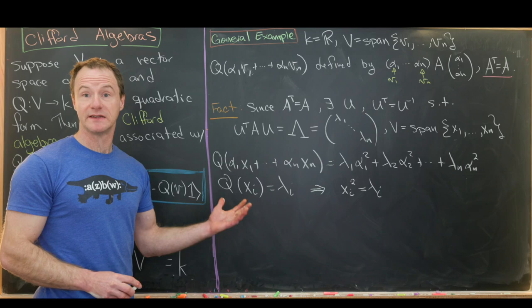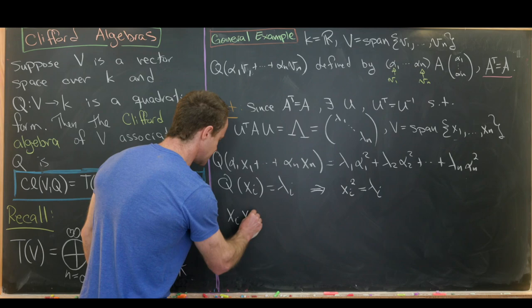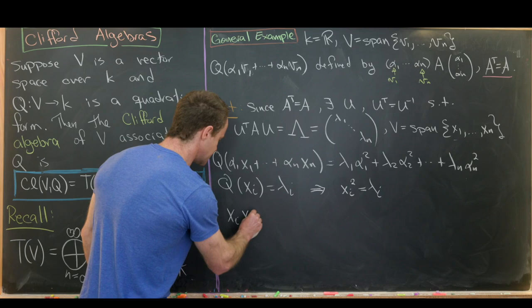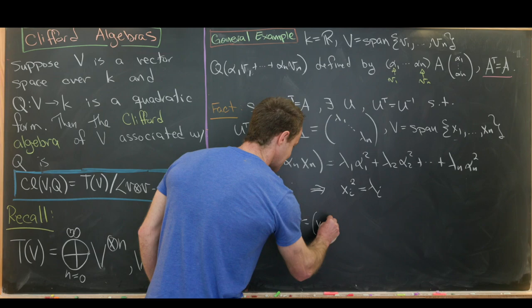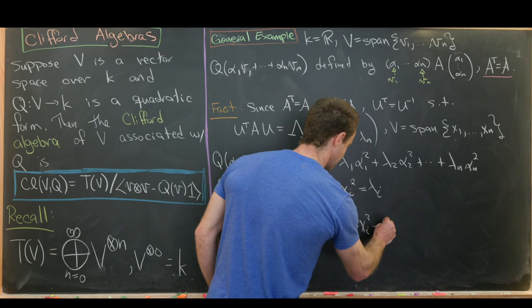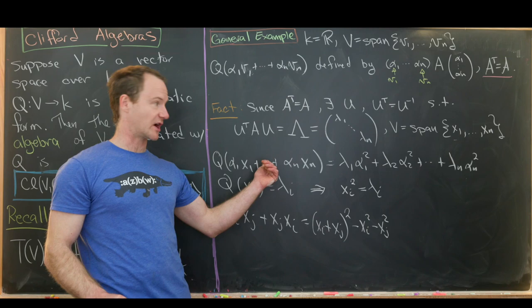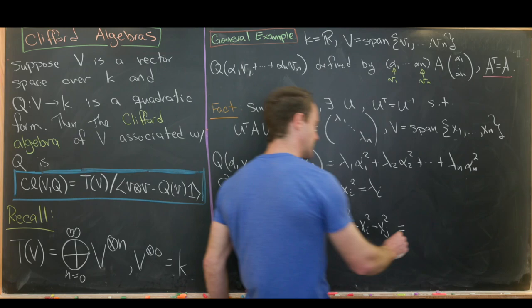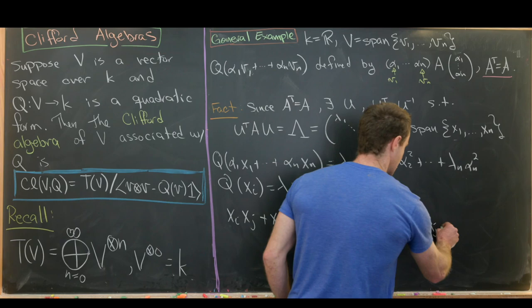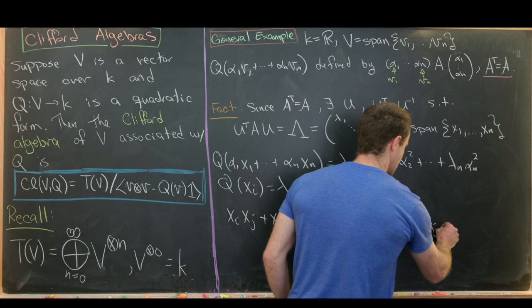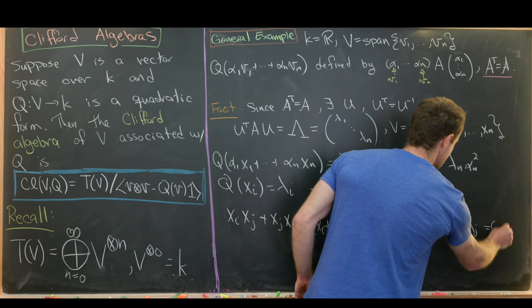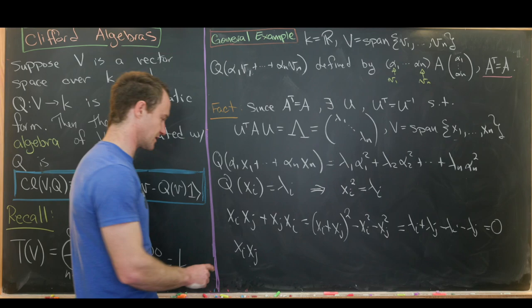Now let's see what happens when we multiply xᵢ with xⱼ. We'll do the same kind of thing as before — adding xᵢxⱼ to xⱼxᵢ and observing that equals (xᵢ + xⱼ)² minus xᵢ² minus xⱼ². Because we know how the quadratic form works, the first term gives λᵢ + λⱼ, then minus λᵢ, then minus λⱼ. Everything cancels out and we get zero. So xᵢ and xⱼ are anti-commutative: xᵢxⱼ equals negative xⱼxᵢ.